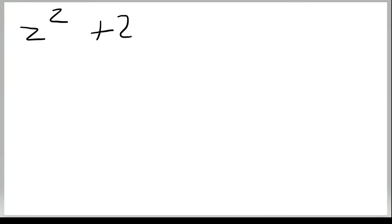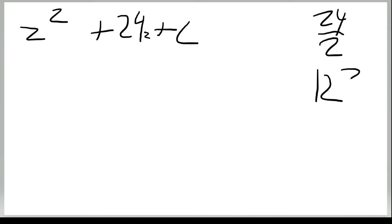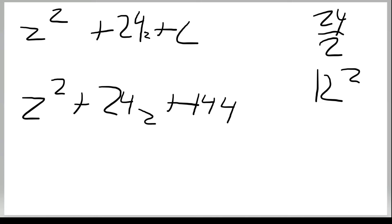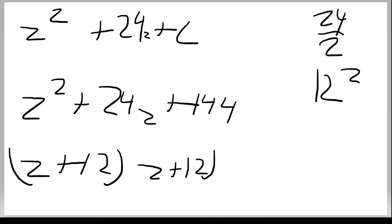Let's try another one: z squared plus 24z plus c. b is 24, so 24 divided by 2 is 12, and 12 squared is 144. So z squared plus 24z plus 144. Check: what plus what is 24 and what times what is 144? It's (z plus 12)(z plus 12). Completing the square is pretty easy.